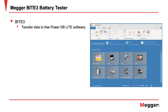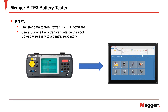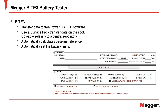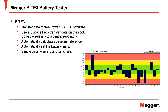You can transfer the data to the free PowerDB Lite software. You can use a Surface Pro to transfer the data on the spot, and the data can then be uploaded wirelessly to a central repository. The PowerDB Lite PC software automatically calculates the baseline reference value for each string, automatically sets the limits for the battery analysis, and each time you test the string the same baseline and limits are automatically used. Simply create a report and automatically see what passed and what failed.